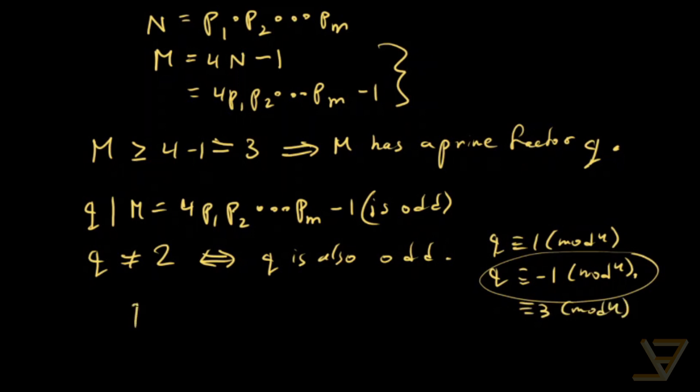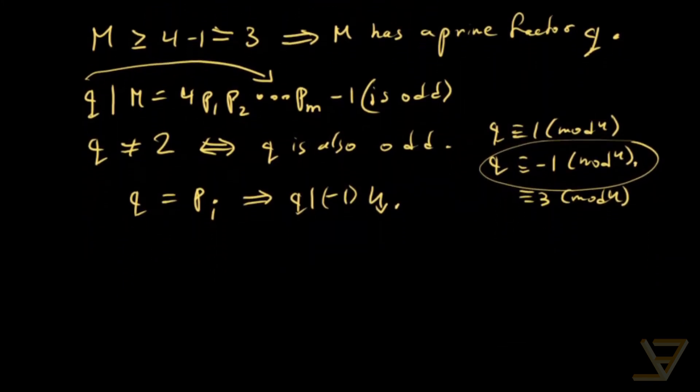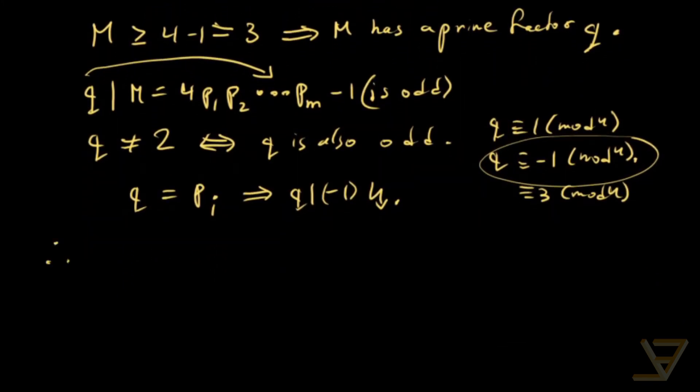So then q would equal some pi. But if q equals some pi, then q divides -1 or 1, which is impossible. So that means every prime factor q of M is congruent to 1 mod 4.